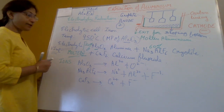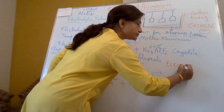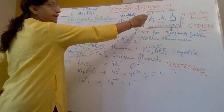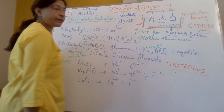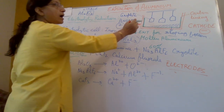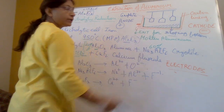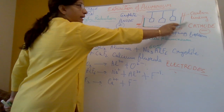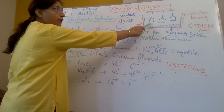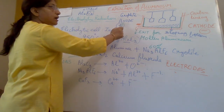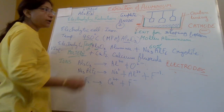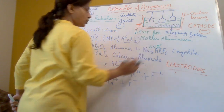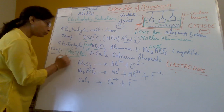The iron tank is covered with a carbon lining which acts as the cathode — the negative terminal. The graphite rods act as the anode — the positive terminal. The electrolyte is the combination of all three molten compounds.